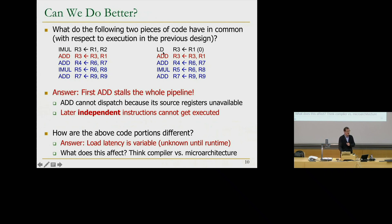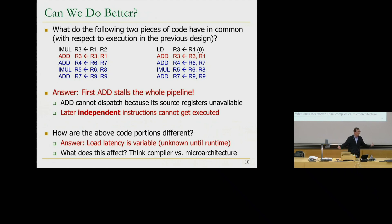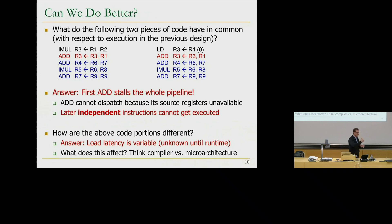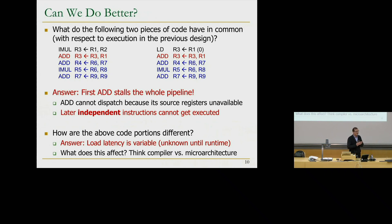One reason the compiler can't always reorder is that it doesn't know the latency of instructions at compile time. Another reason is branches: if there's an if-else branch, you can't move an instruction from under the branch up, because you don't know if it will be executed. Compilers actually jump through a lot of hoops, but they still cannot achieve the performance of out-of-order execution. We're not going to go deeply into this, but if you take a compilers course, that's what they do — figure out how to reorder code in the presence of branches and long-latency operations.